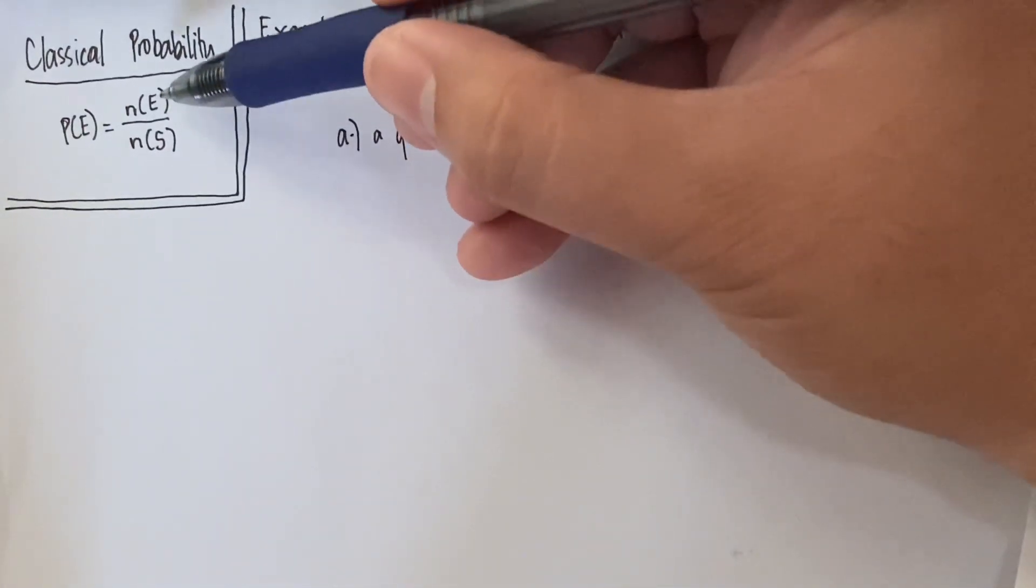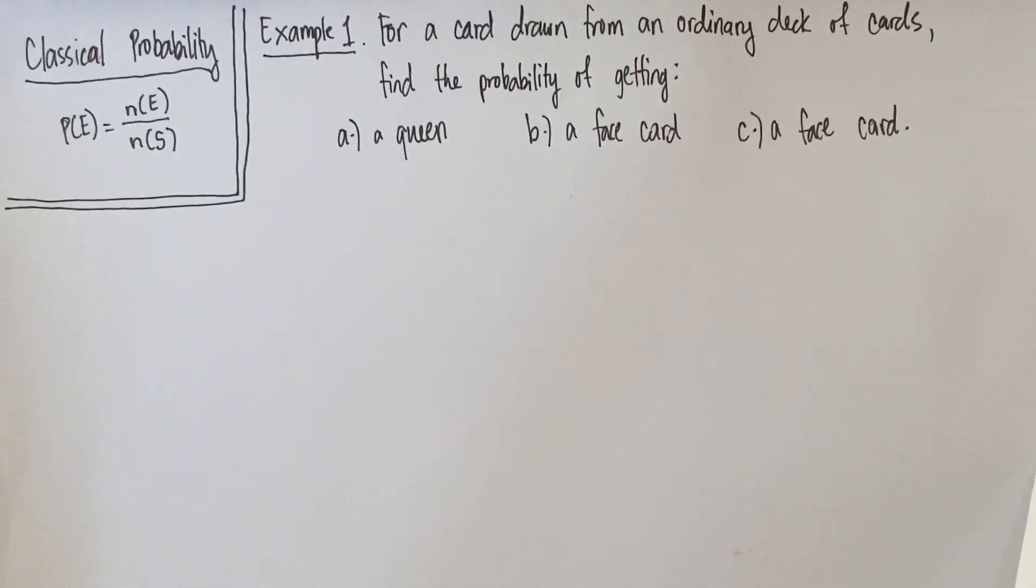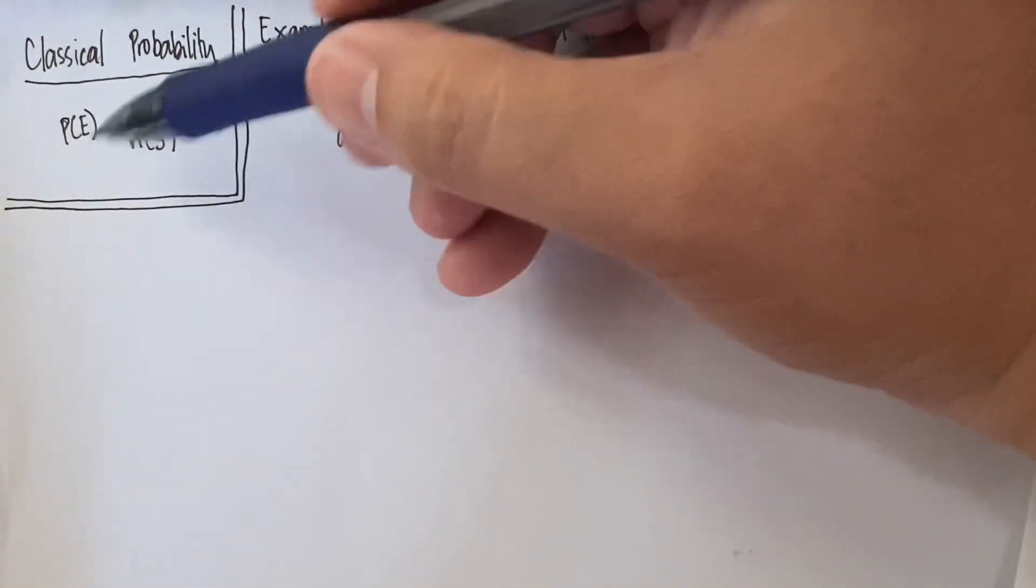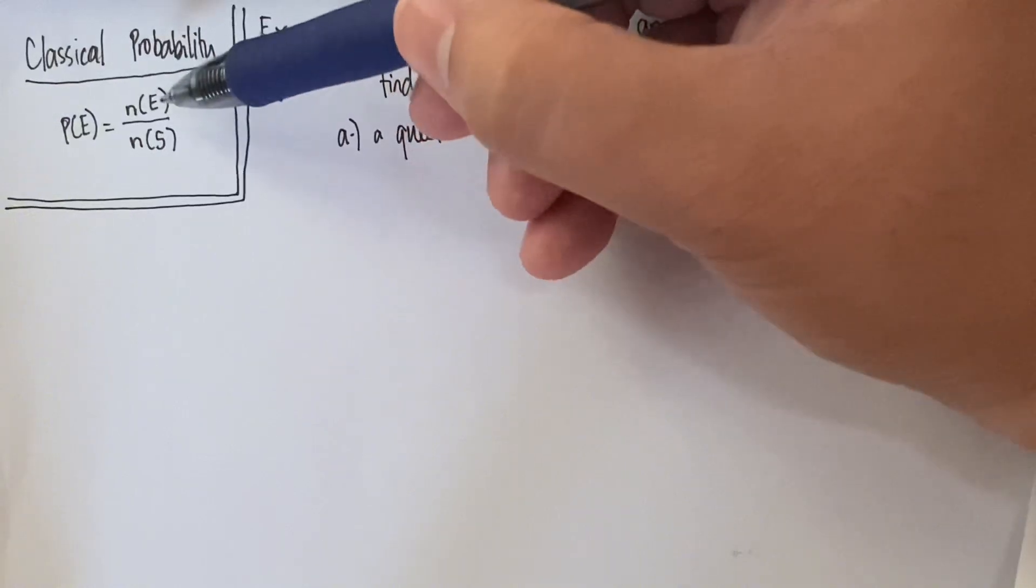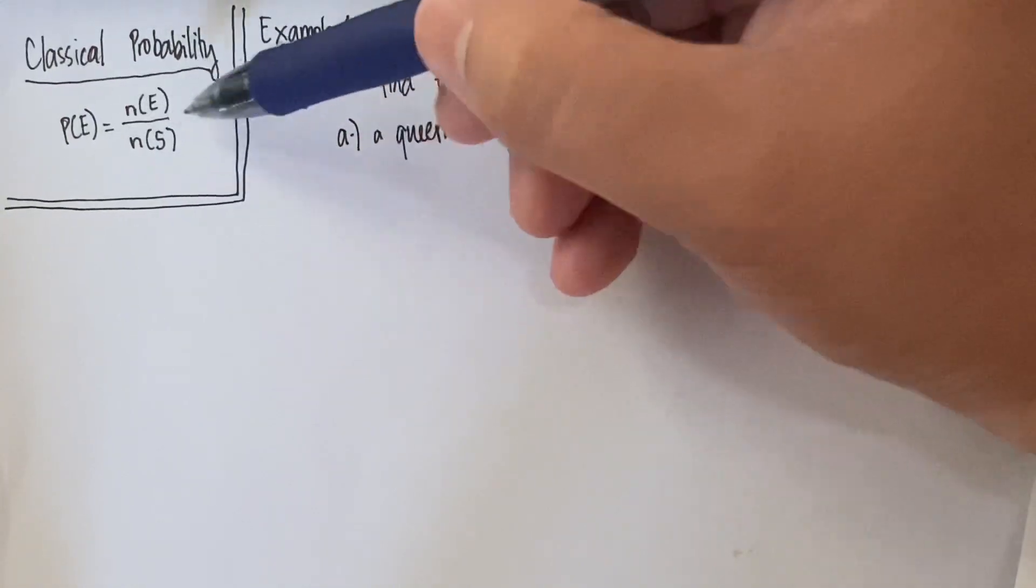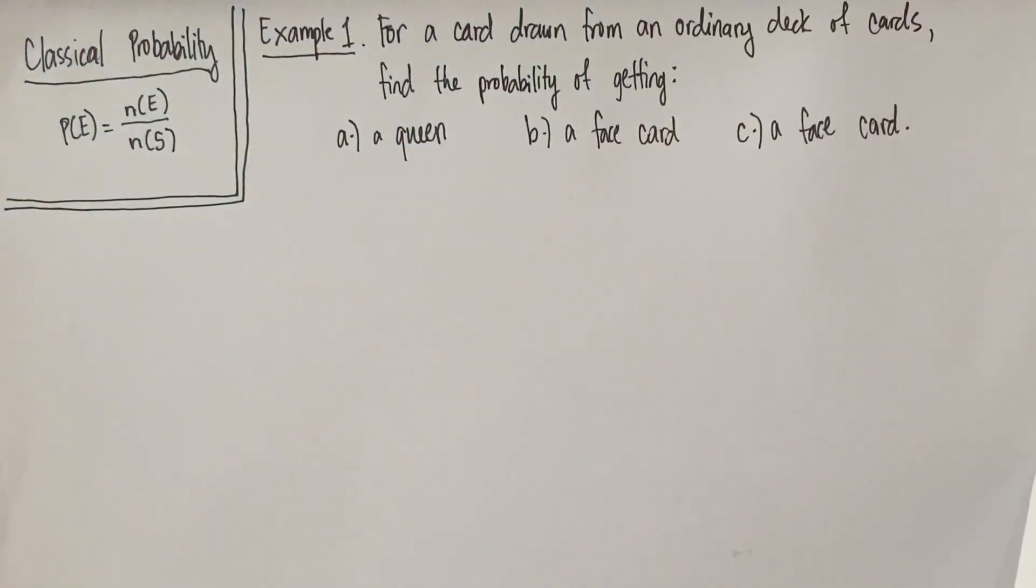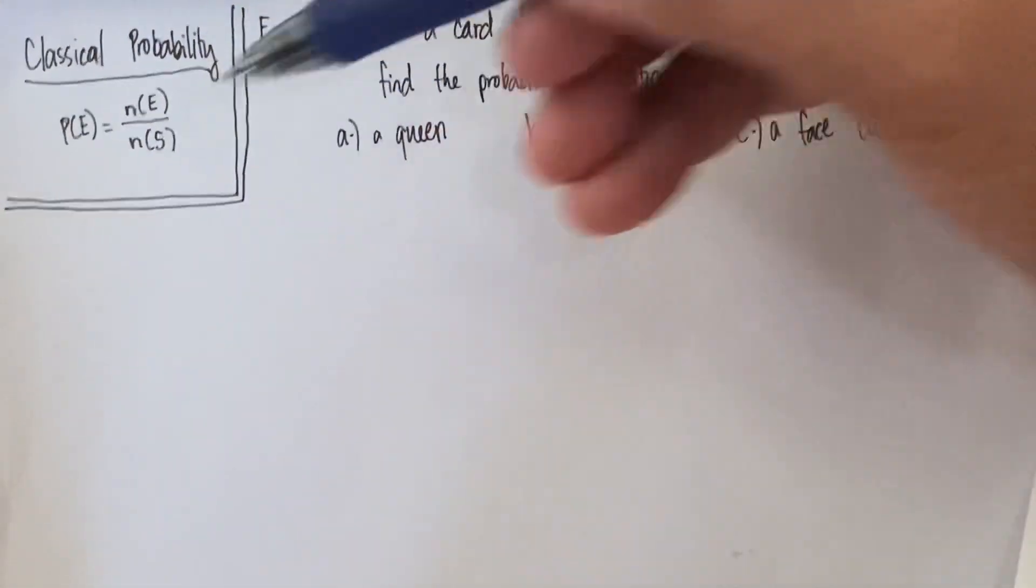In probability theory, we call this an event. In set theory, we call this simply as a set. So again, the probability of a certain event is equal to how many sample points there are in a certain event divided by the number or how many they are in the total sample space.